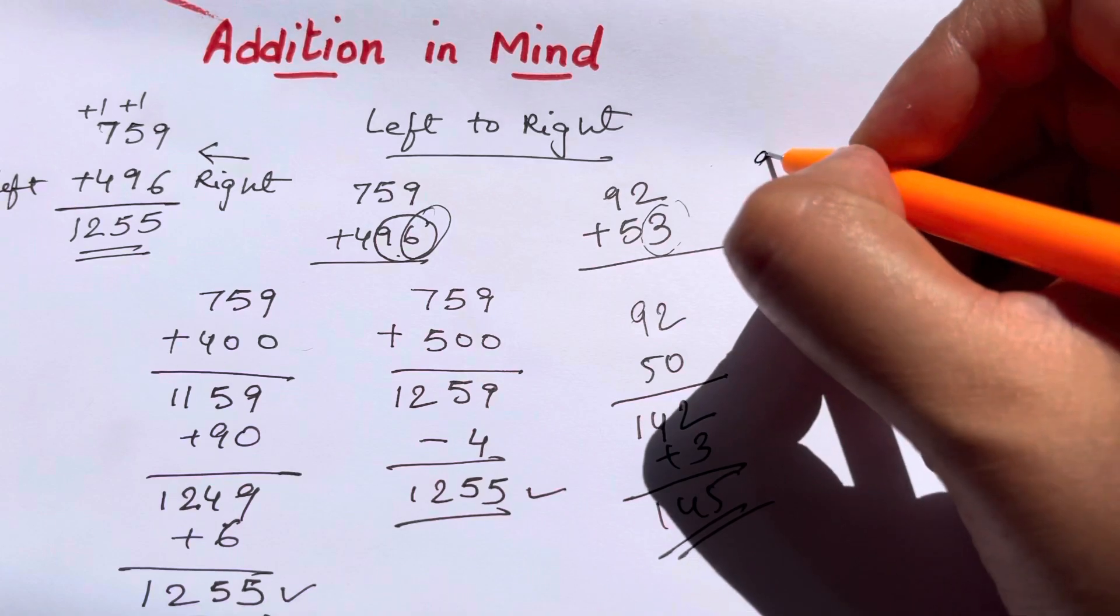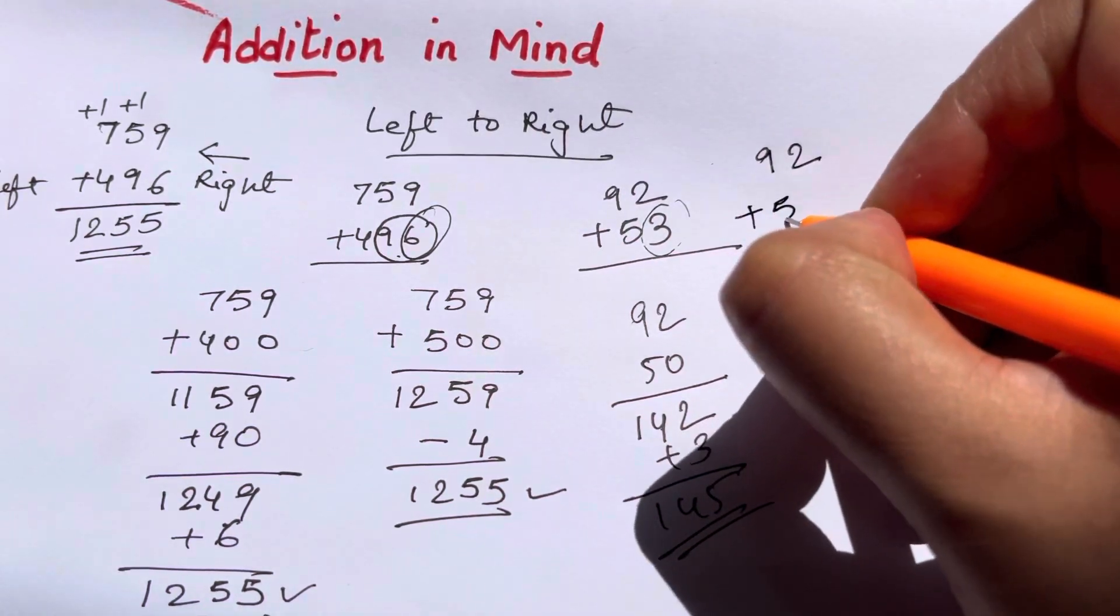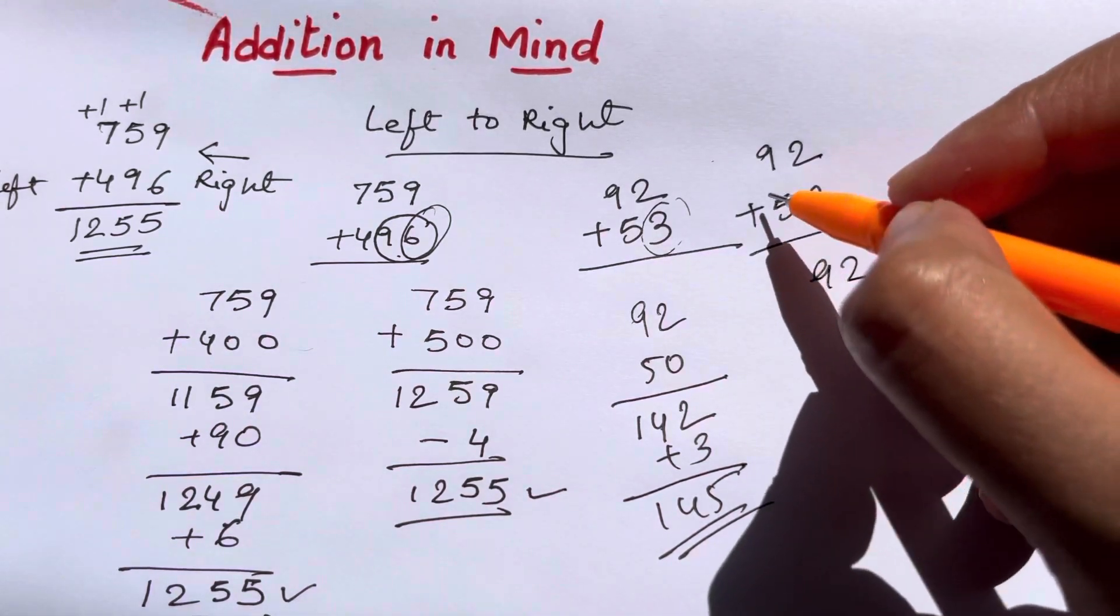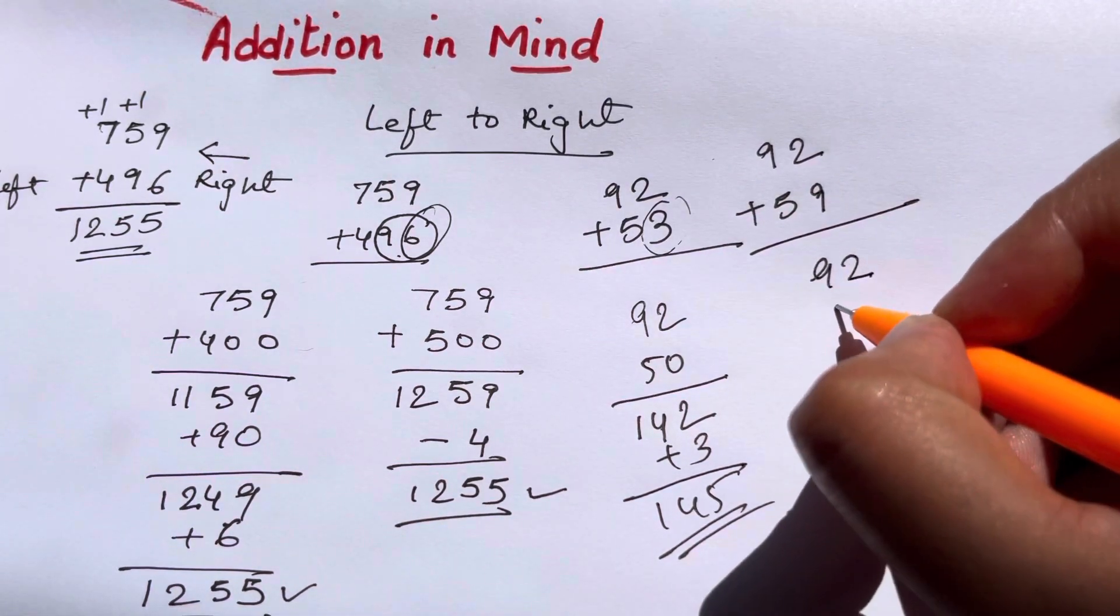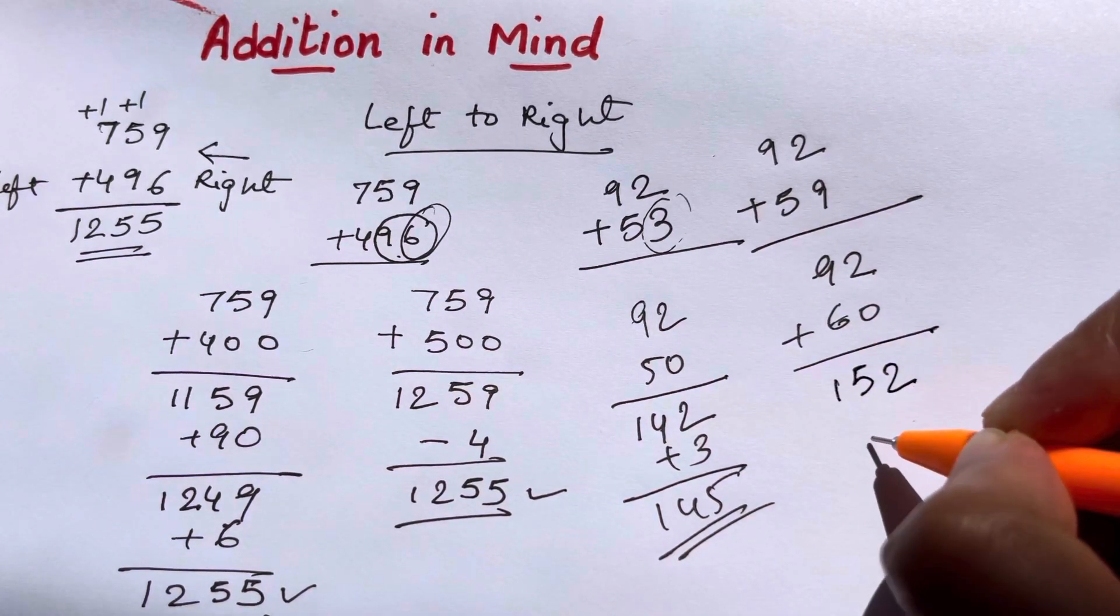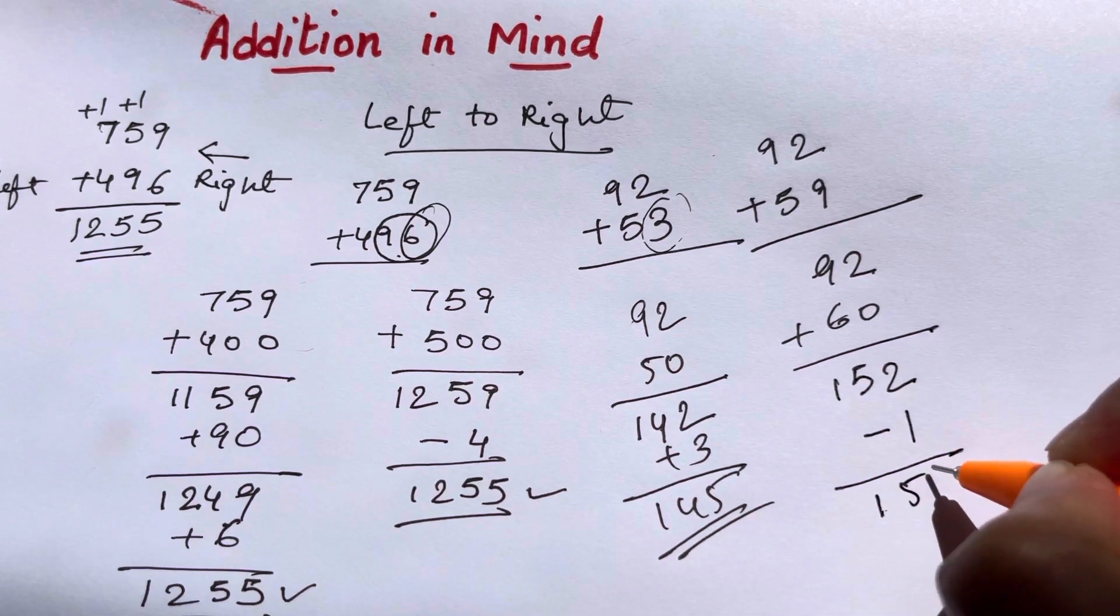Next example: if you have 92 plus 59, 59 you're going to round off to 60 and add up. 92 plus 60, 9 plus 6 is 15, so 152 minus 1 is 151. So how quick that was.